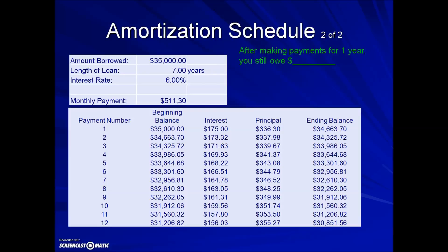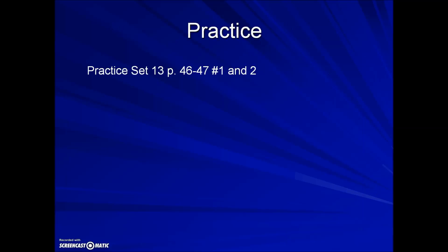Continuing with the same schedule: after making payments for one year, how much do you still owe? One year is 12 months worth of payments, so we go down to payment number 12 and look under the ending balance column to answer this question. You're now ready to do some practice, which you can find on page 46, dealing with these same types of problems reading amortization schedules.